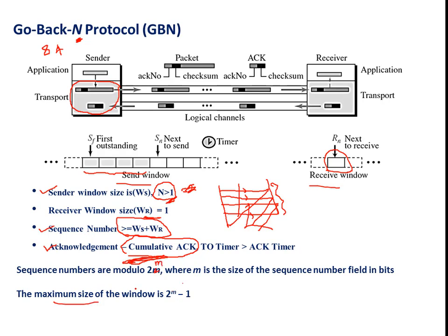The maximum window size is 2 to the power m minus 1. The outstanding window is 4, so 2 to the power 4 minus 1 equals 7. The total window size is the sum of the outstanding window (sf) and the next-to-send window (sn), which equals 7.